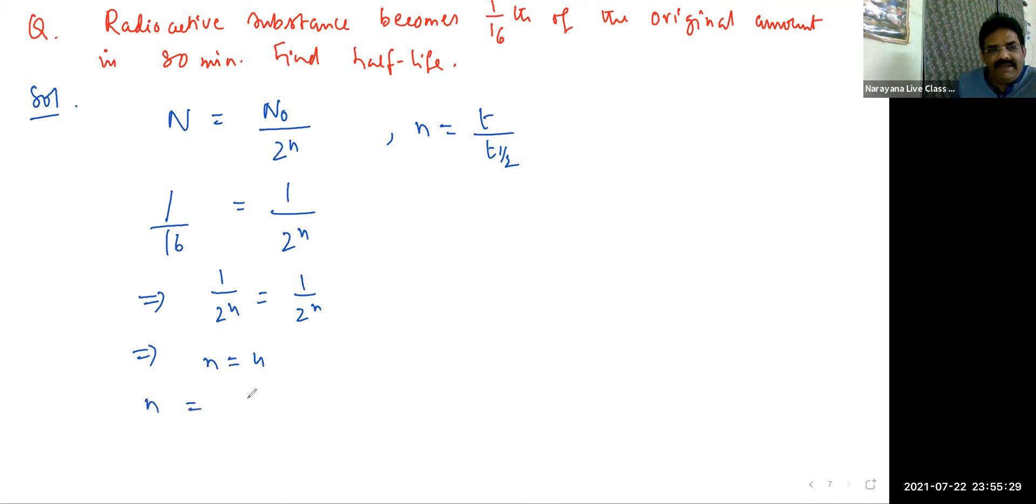Now apply the formula n = T/T_half. So T_half = T/n. The time given is 80 minutes and n = 4, so the half-life is 20 minutes.